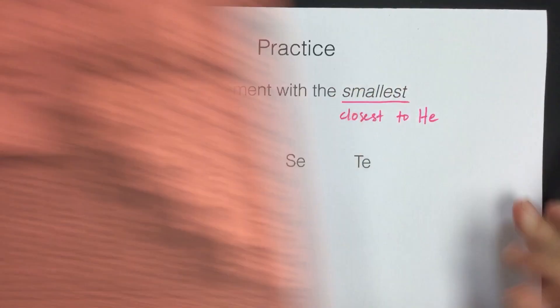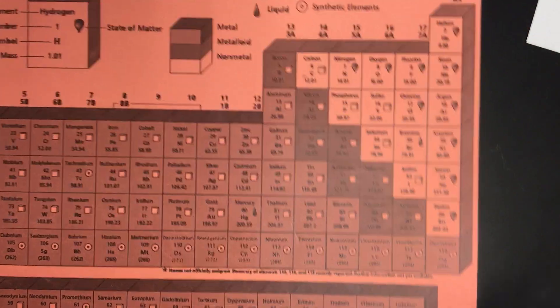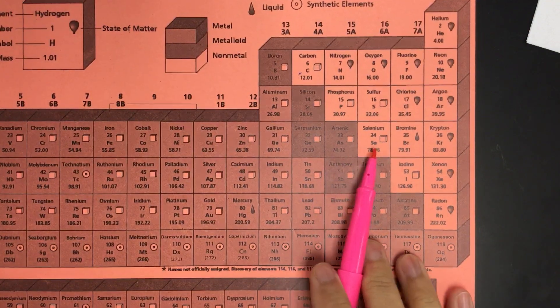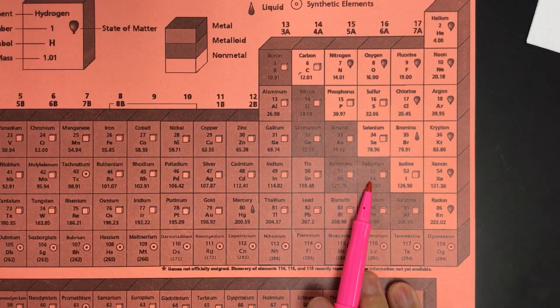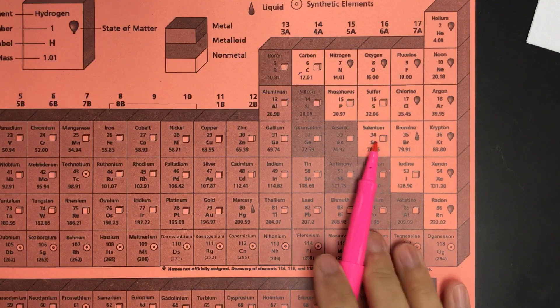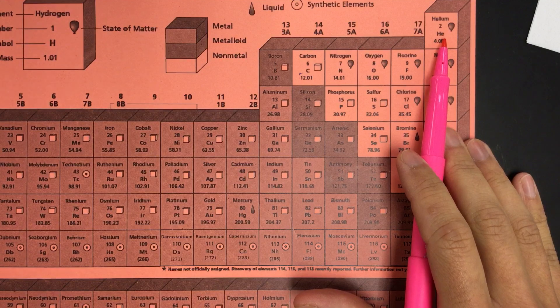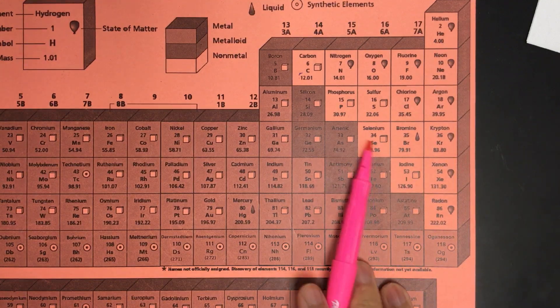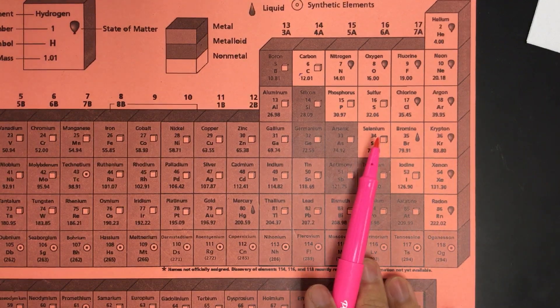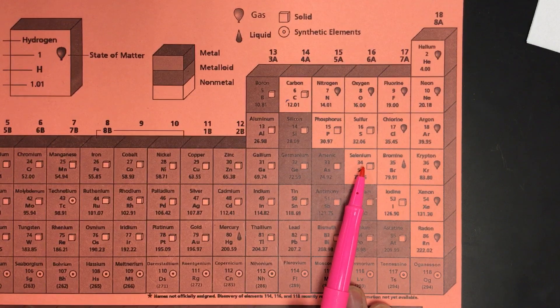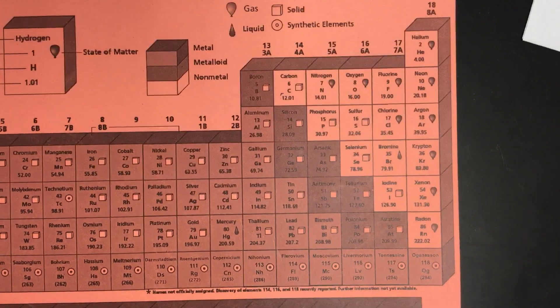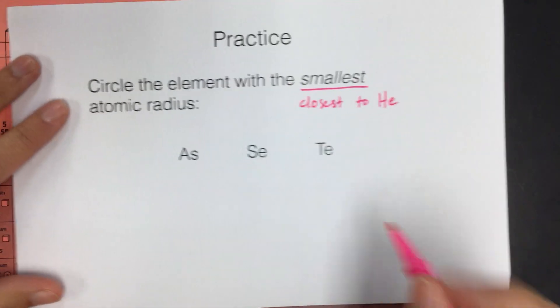All right, so helium's here. Let's find arsenic, selenium, and tellurium. Here's arsenic, here's selenium, here's tellurium. So we're looking at these three, right? And we want the one that's closest to helium because helium's the smallest on the table. So of these three, selenium is the closest to that top right corner of the table. So our answer for this one is selenium.